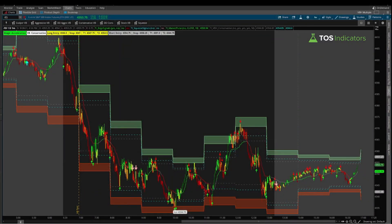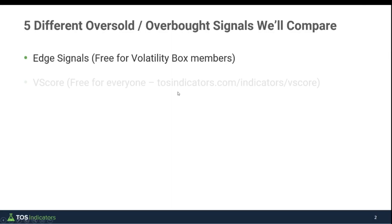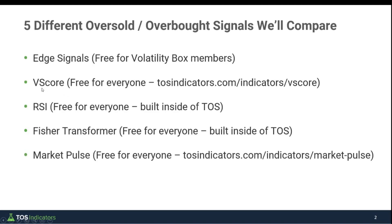I hope this video was helpful for understanding overbought/oversold signals and which one fits your trading style. The final four discussed are all free. The V-Score was effective for knowing standard deviation zones but not necessarily precise signals. The RSI was interesting for that middle trade — compelling that a simple baseline indicator was still effective. The Fisher Transformer has lots of signals, but using stacked arrows helps clear out the noise. The Market Pulse is good for breakout-style trades and knowing trend context, but if you waited for the trend switch and wanted an ideal entry price, you were a little too late. Good luck trading and we'll see you in the next update.